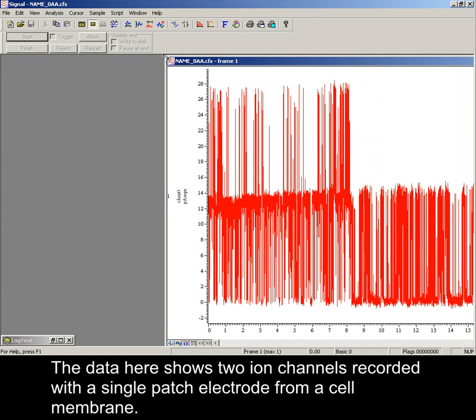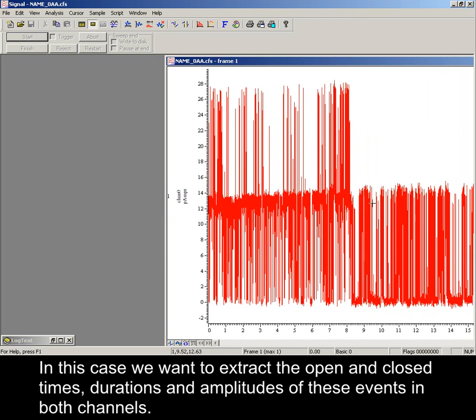The data here shows two ion channels recorded with a single patch electrode from a cell membrane. In this case, we want to extract the open and closed times, durations and amplitudes of these events in both channels.